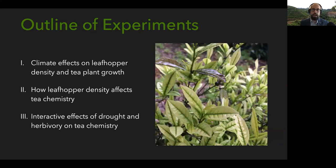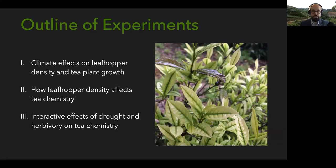I'm going to talk about three experiments I did in this system. The first looks at how climate affects leafhopper density and tea plant growth. The second looks at how changes in leafhopper density affect tea chemistry, which has implications for quality. And the third looks at how plants respond when experiencing both herbivory from insects at the same time as other sources of stress.